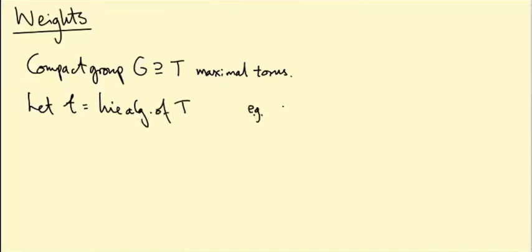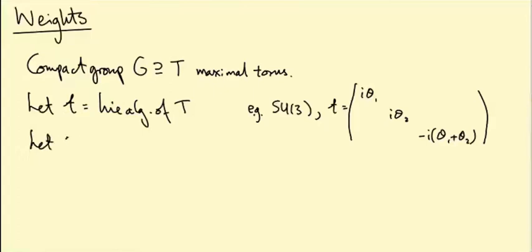For example, if we're looking at SU(3), little t is the set of diagonal matrices i*theta_1, i*theta_2, -i*(theta_1 + theta_2) - the things you exponentiate to get the maximal torus. We're going to complexify the Lie algebra of G, and inside that we're going to find the complexification of little T, which I'm going to call H.